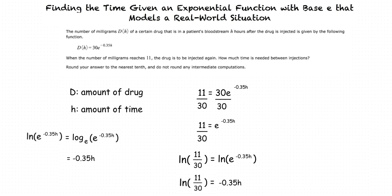Now that we've found that natural log of 11 over 30 is equal to negative 0.35H, we can divide both sides by negative 0.35. We find that H equals negative natural log of 11 over 30, divided by 0.35. That's our exact answer. We can use a calculator to find an approximate decimal answer, which gives us approximately 2.9 hours.